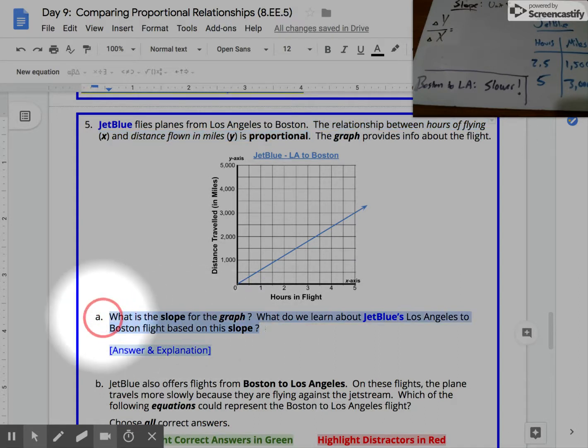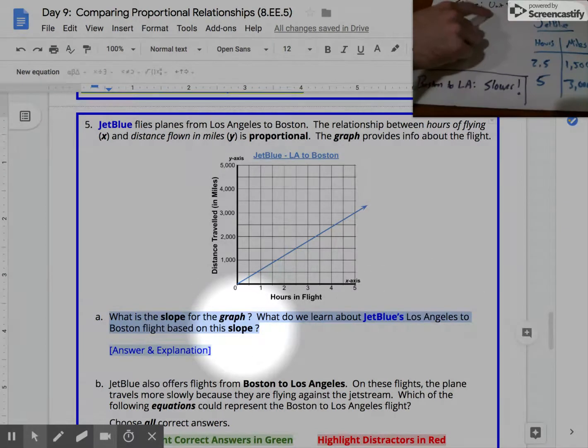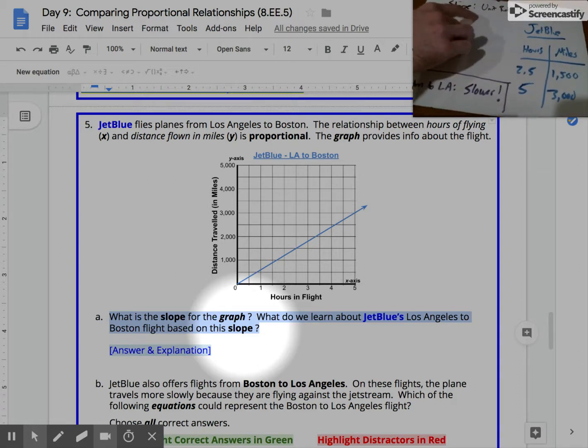Part A asks us to figure out what is the slope for the graph and what do we learn about JetBlue's Los Angeles to Boston flight based on this slope. So again, slope is unit rate. To find that unit rate, if we have a graph, to find that slope, we need to find some data points on the graph.